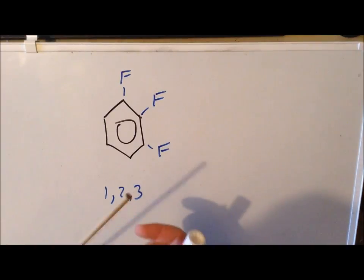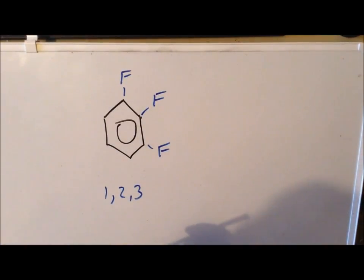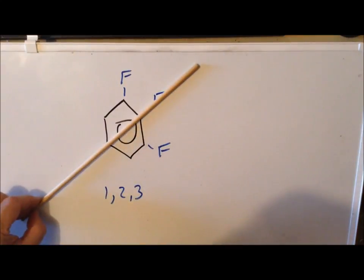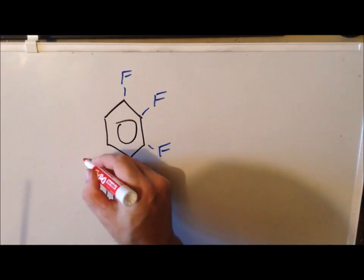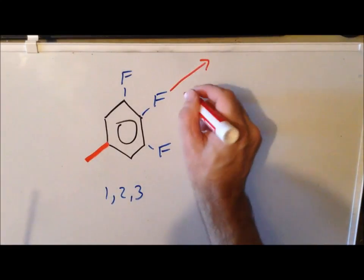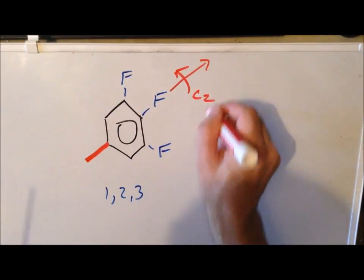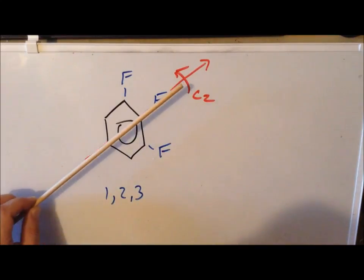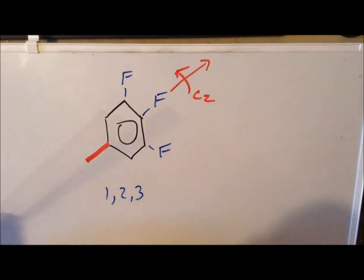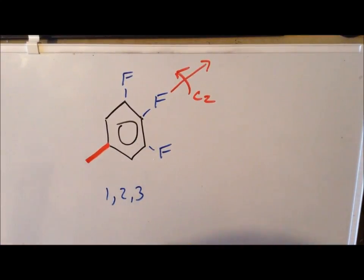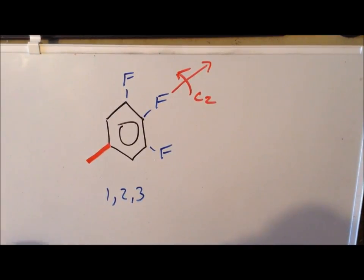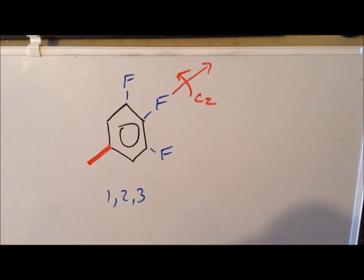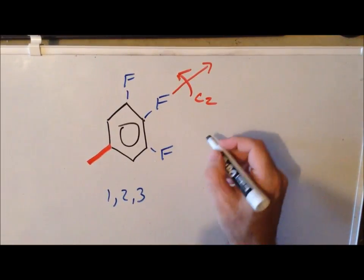The high-order rotation axis we're going to find is one going along the dowel — along this red axis here, we have a C2. Similarly to other molecules we've looked at, there will be a mirror plane going perpendicular to the board that reflects one fluorine into another. We also have a mirror plane in the plane of the board. So we have four symmetry elements: the identity, C2, and two sigma v's, which give us the point group C2v.